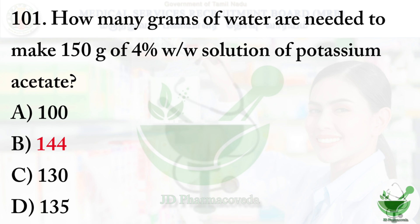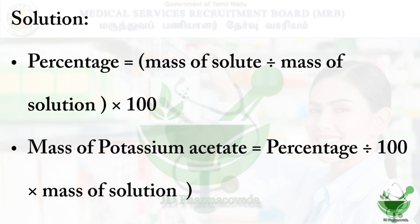Let's see the solution. There is a formula for percentage concentration calculation. The formula is: percentage = mass of solute divided by mass of solution × 100. We rearrange to find mass of potassium acetate: mass of potassium acetate = (percentage / 100) × mass of solution.